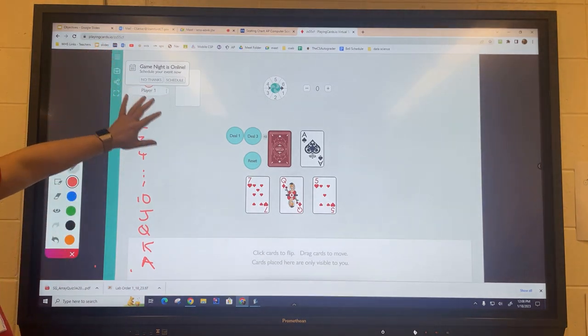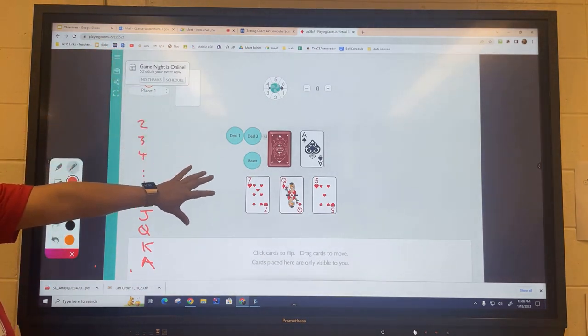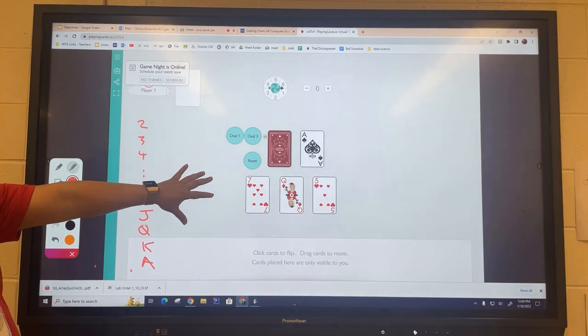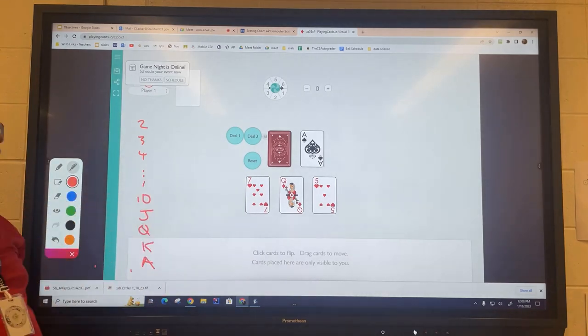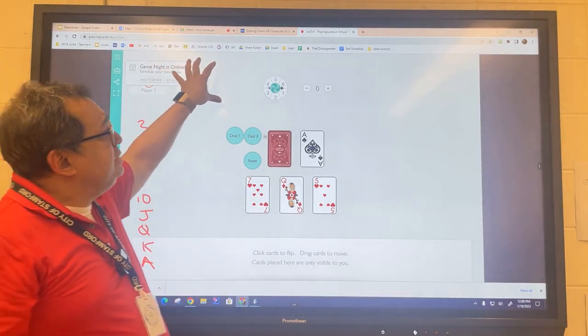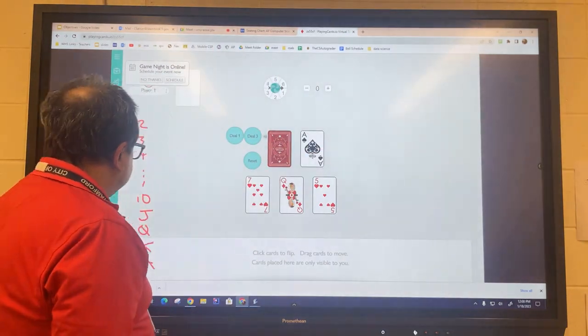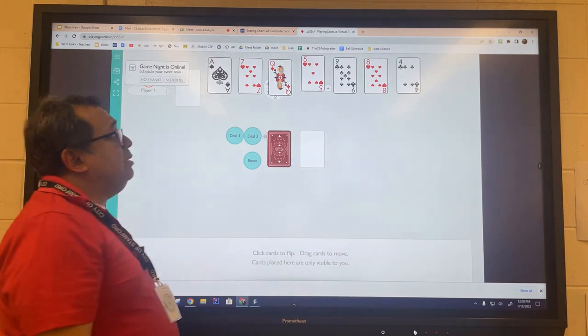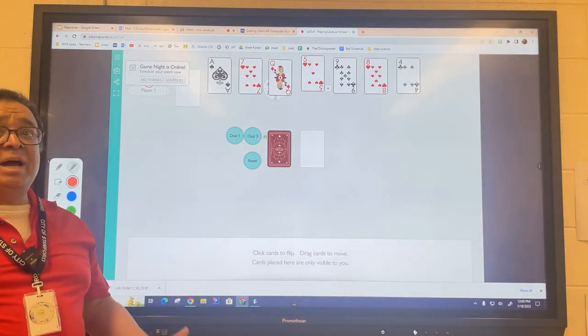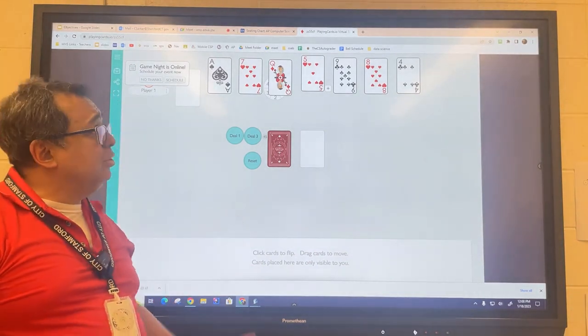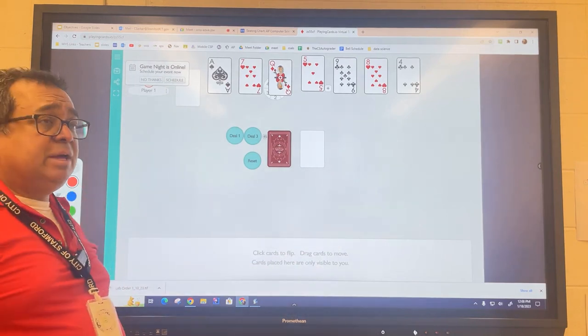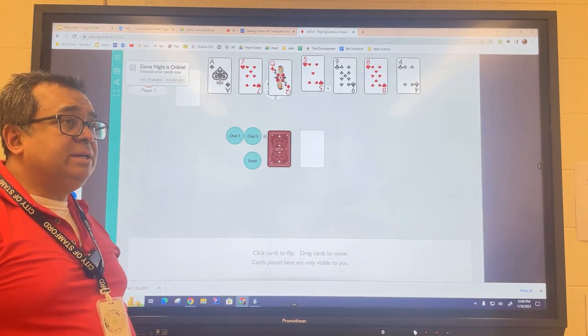So what I'm going to ask you to do is go on playingcards.io, get to this room. If you're having trouble, ask your person next to you for help. We're going to just deal seven, six or seven cards at the top here to get started. That's going to be our starting position. If by the sheerest bit of luck your cards are already sorted, then shuffle them and do it again.